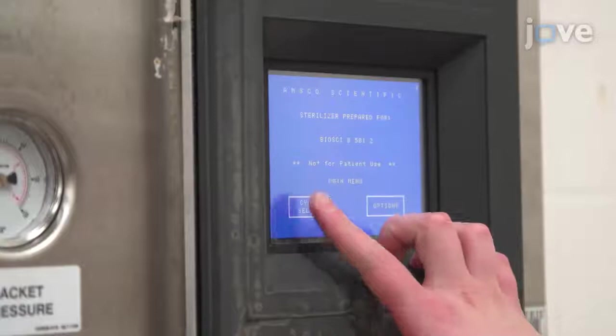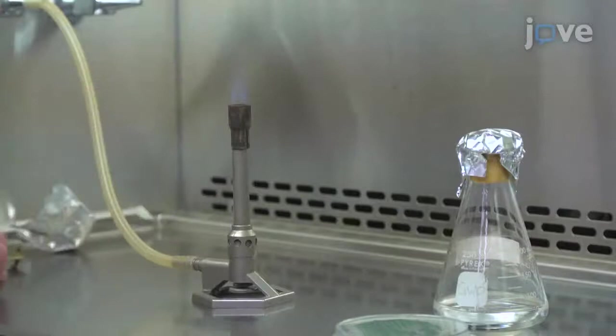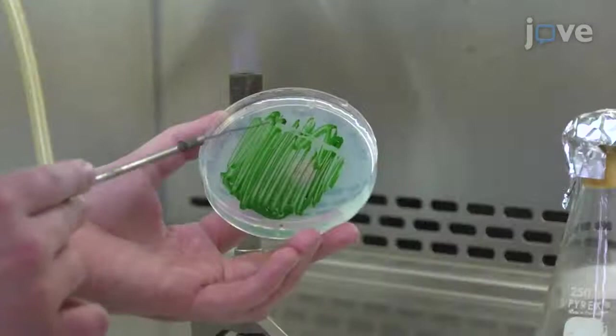After this, allow them to cool to room temperature. To inoculate the media, flame sterilize an inoculation loop. Then use the loop to transfer the cyanobacterial culture into the 250-milliliter flask that contains 50 milliliters of medium.